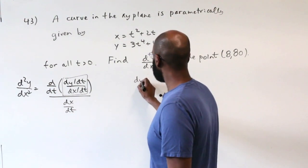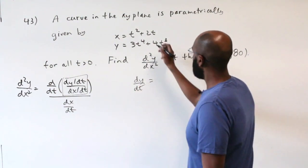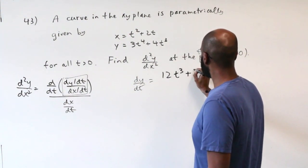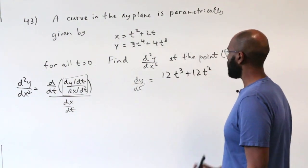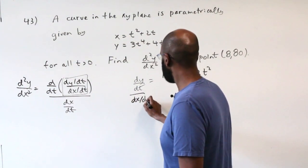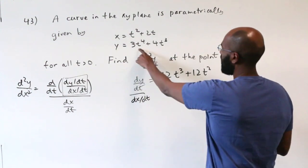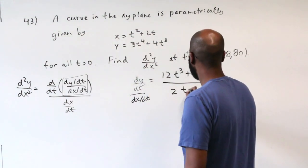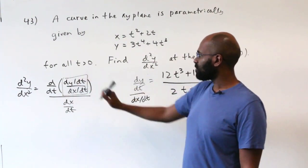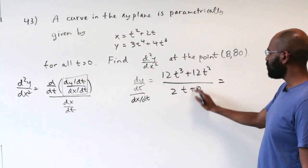So first of all, we have dy/dt, and that is 12t³ + 12t². And we're dividing by dx/dt, and that is 2t + 2. And we're given explicitly here that t is positive. So we can actually do the division here, because the only issue we would have is if t was negative 1 where we have a zero denominator, but that's not the case.